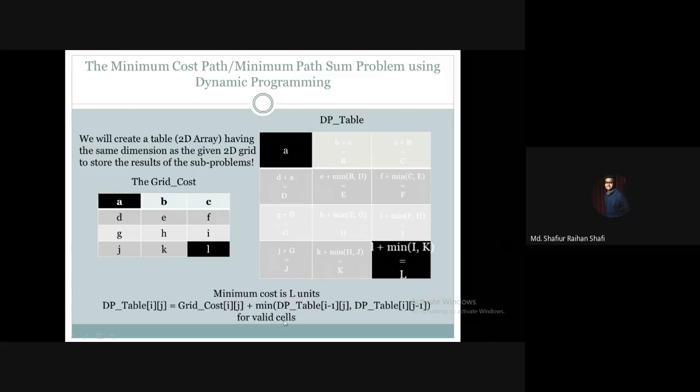So this is how we solve the minimum cost path or the minimum path sum problem using the dynamic programming paradigm. I hope you have understood the mathematical formulation. In the next tutorial we are going to see a full example of how we can implement this problem. If you have any queries, please provide them in the comment section. Thank you, and see you in the next tutorial.